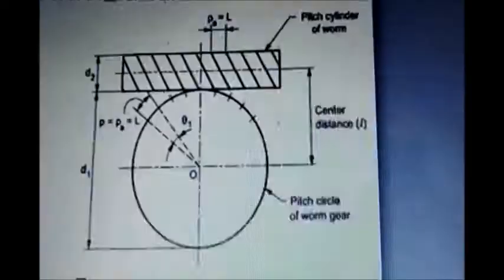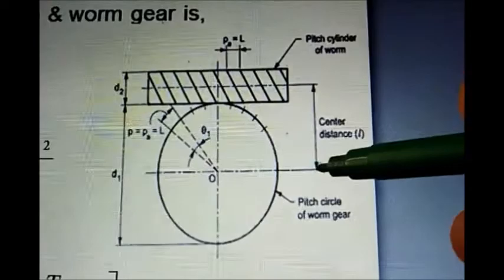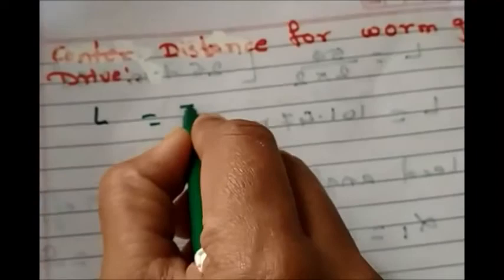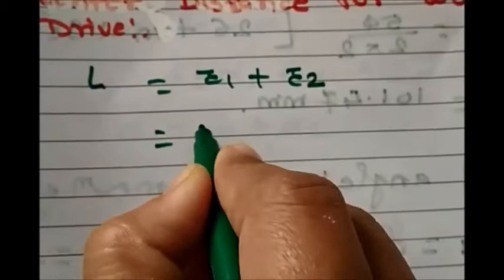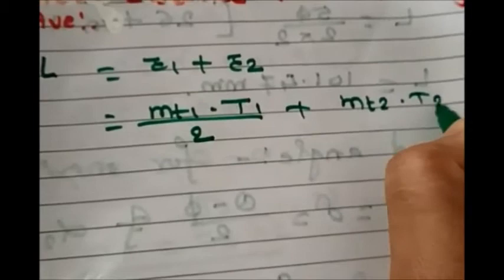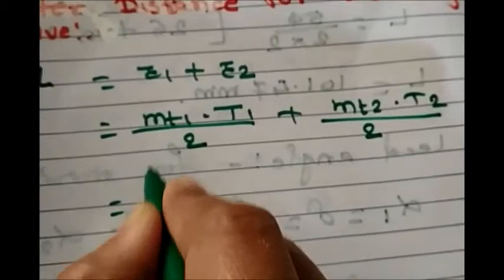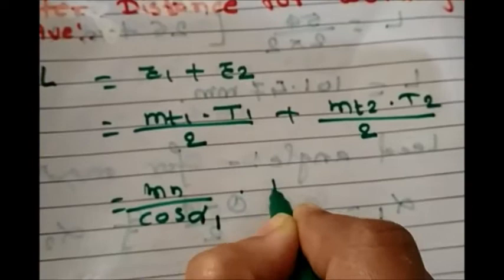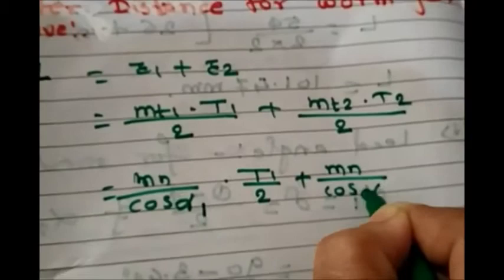We know that center distance is equal to r1 plus r2, so L = r1 + r2. Now instead of r, let's put the module terms: mt1·t1/2 + mt2·t2/2. In terms of normal module mn, this becomes: mn·t1 / (2·cos α1) + mn·t2 / (2·cos α2).